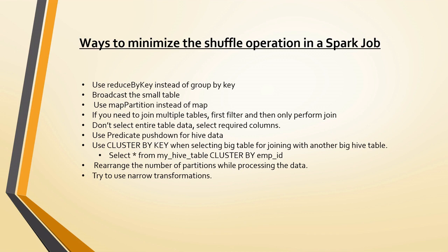If you need to join multiple big tables, try to filter out the unnecessary data first and then perform the join. Also, avoid selecting all columns with SELECT * — instead, select only the columns that are necessary; this reduces shuffle and improves Spark performance. Additionally, use predicate pushdown for Hive data, which filters only the data required for computation at a high level and extracts a smaller amount of data.